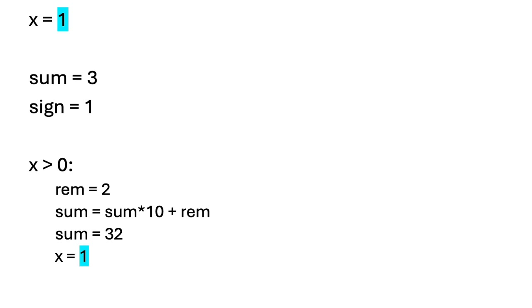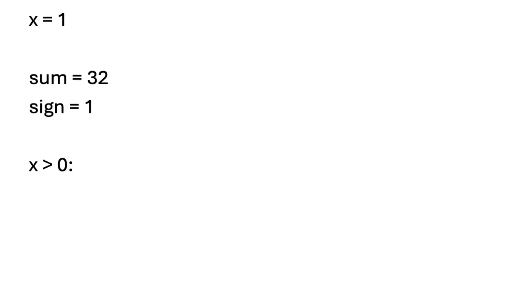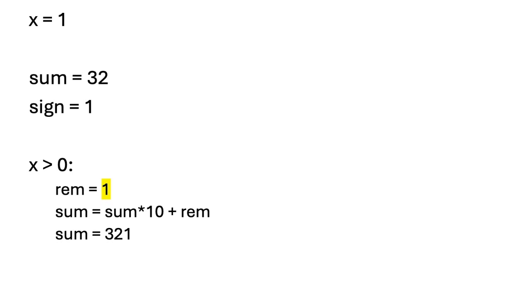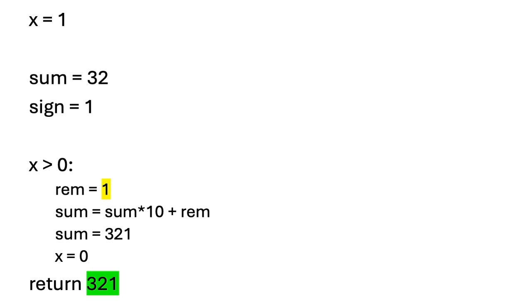Our sum is 32. We repeat the same step since x is greater than 0. We calculate the remainder, which is the ones digit, which is 1. Our new sum is 321. Now we remove the ones digit — the new number equals 0. Since x equals 0, we break the loop and return sum times sign, which is 321 — the reverse integer for 123.